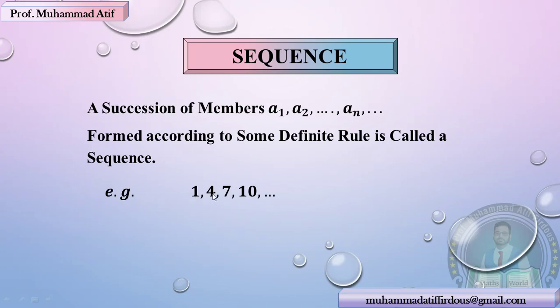A question is asked: what is the difference between sequence and series? In a sequence, terms are separated by commas. In a series, terms are separated by a plus sign or minus sign. So if a sign is involved, we have a series; if a comma is involved, we have a sequence.